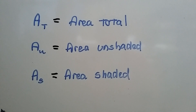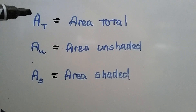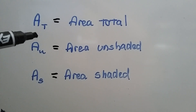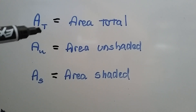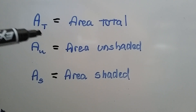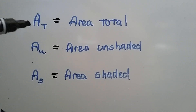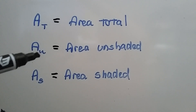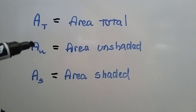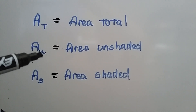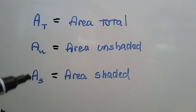In this lesson, you're going to see some subscripts next to the A. Capital A is for area. The little t subscript means the total, so it's the total area. When you see a little u, it's going to be the area of the unshaded region. If you see a little s, it's going to be the area of the shaded region.